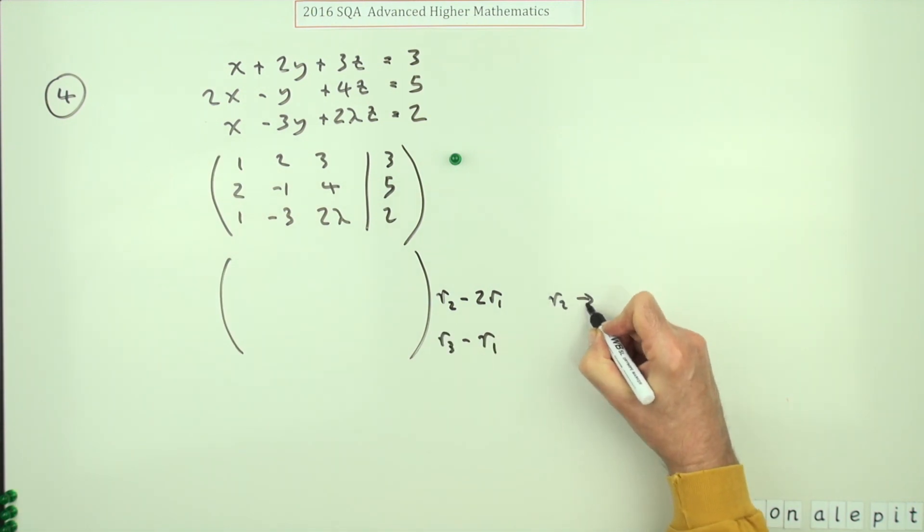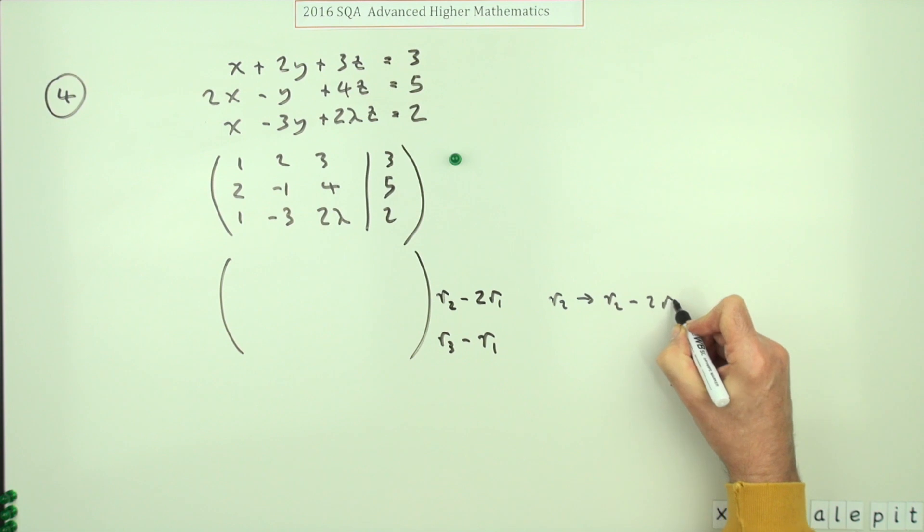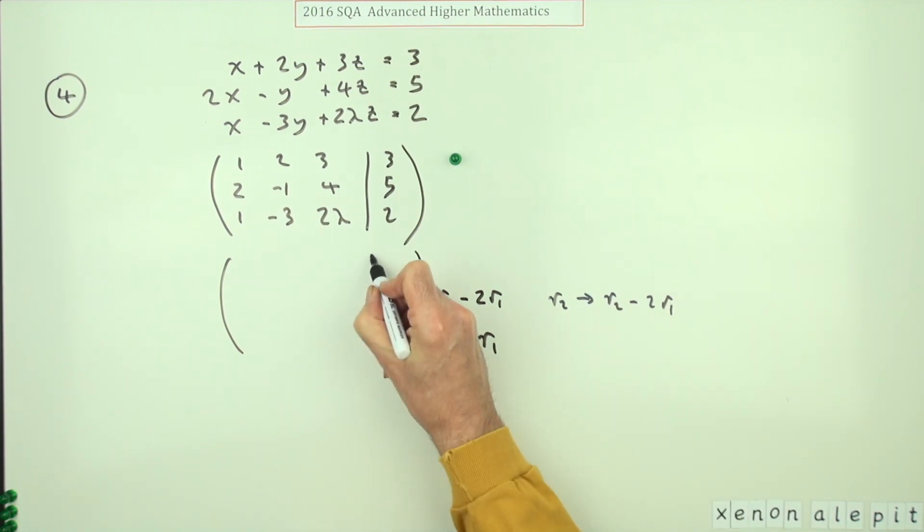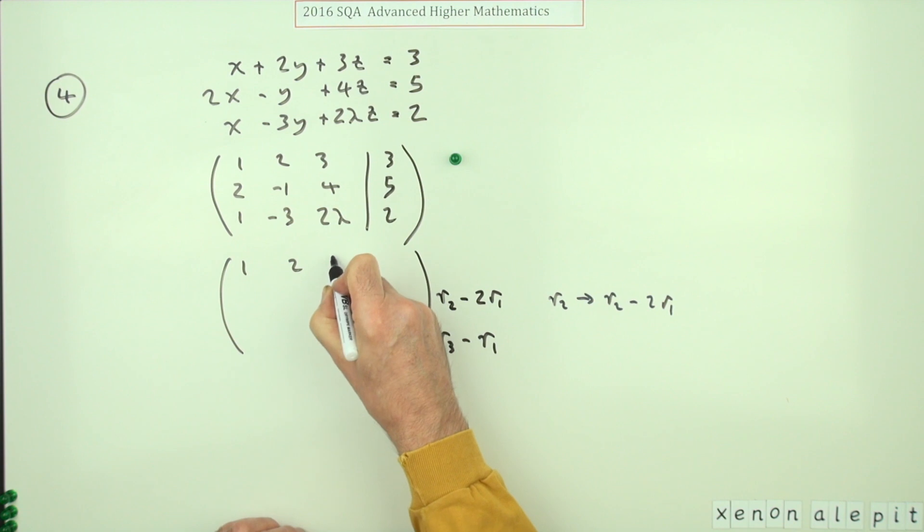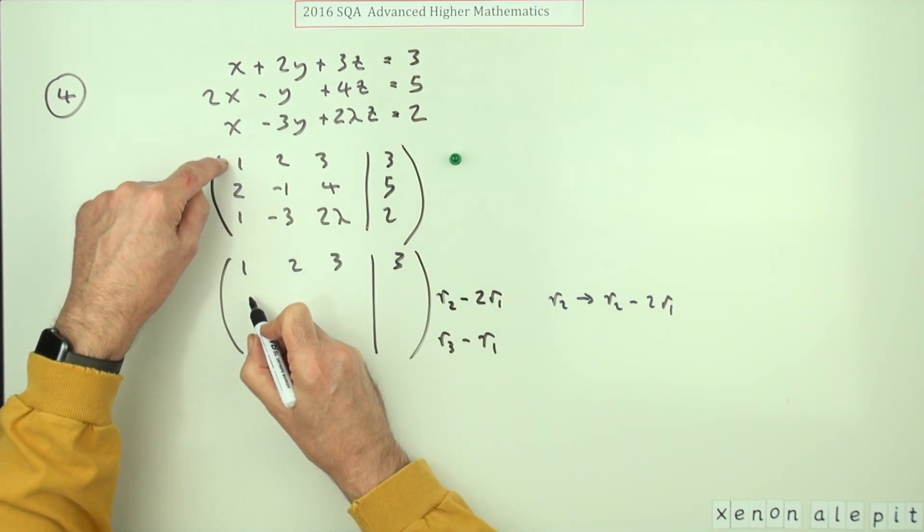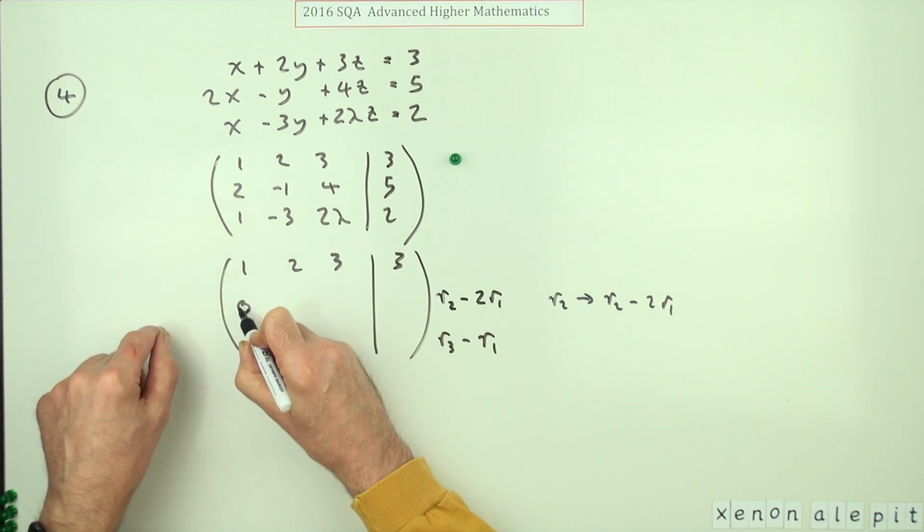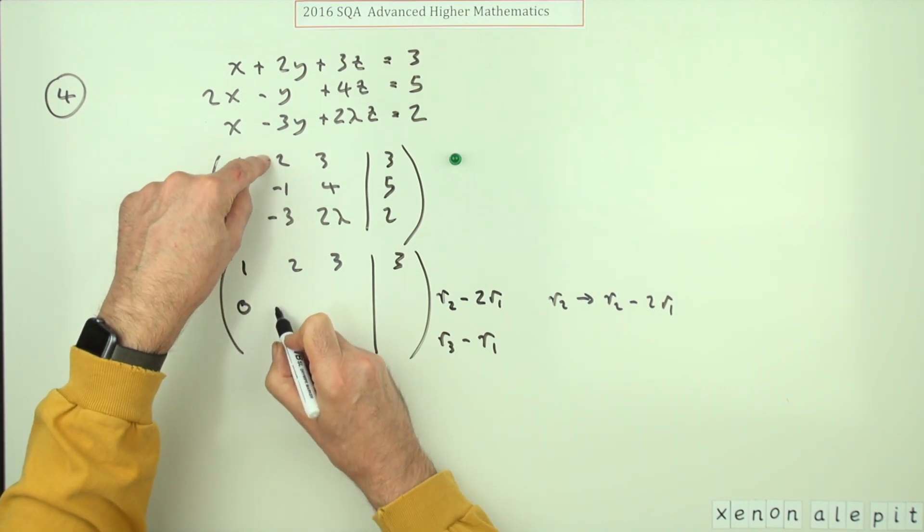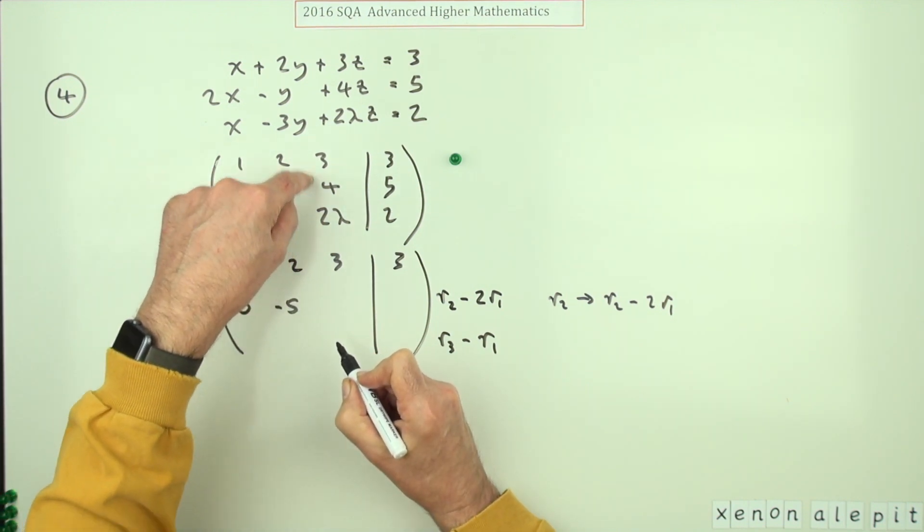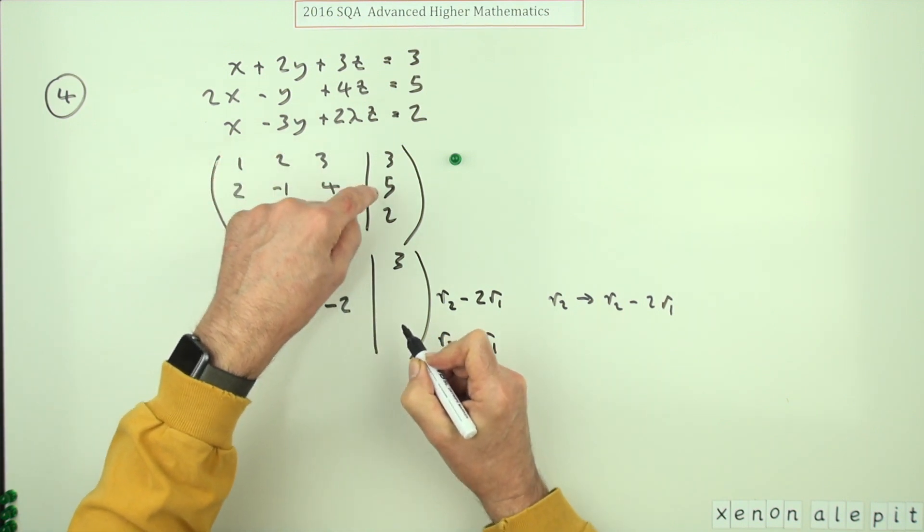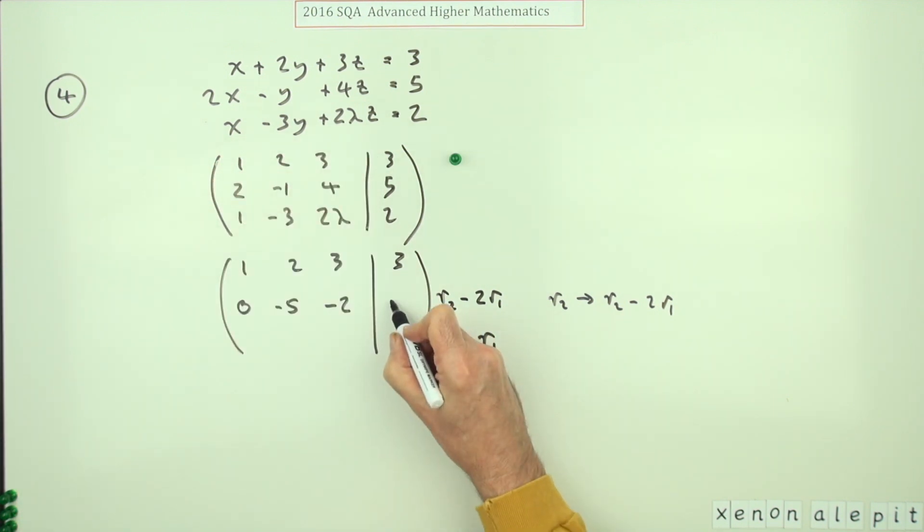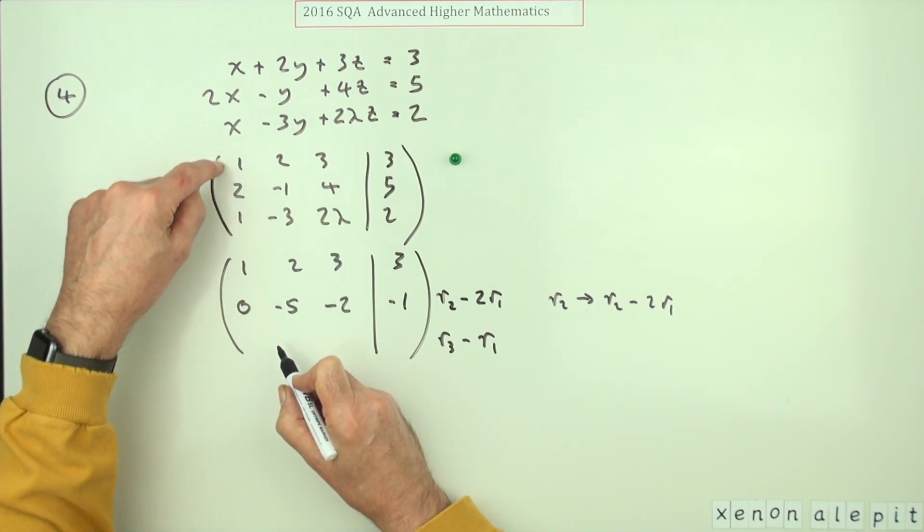Doing that's sufficient. So that stays as one, two, three, three. Then it'll be two take away double the top: two take away two is zero. One take away four is negative five. Four take away six is negative two. Five take away six is negative one.